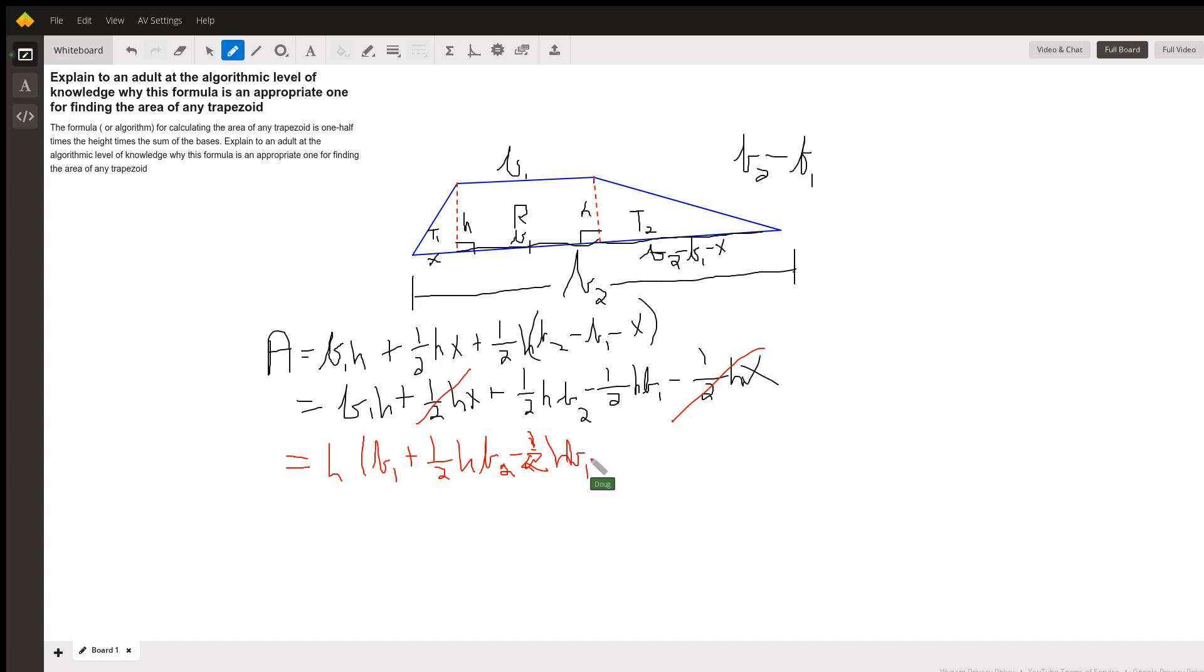Here we go. And these two terms are similar. One B sub 1 minus one-half B sub 1 gives me one-half B sub 1. Gives me one plus one-half B sub 1 plus B sub 2.